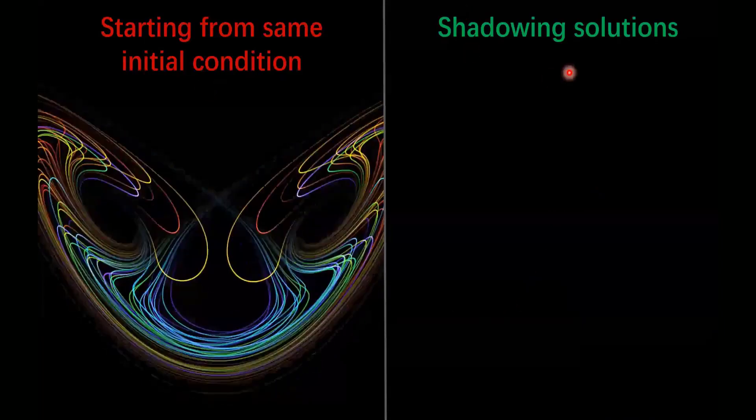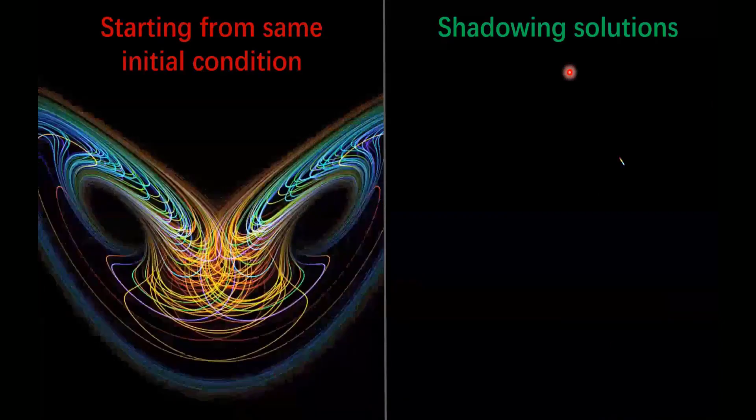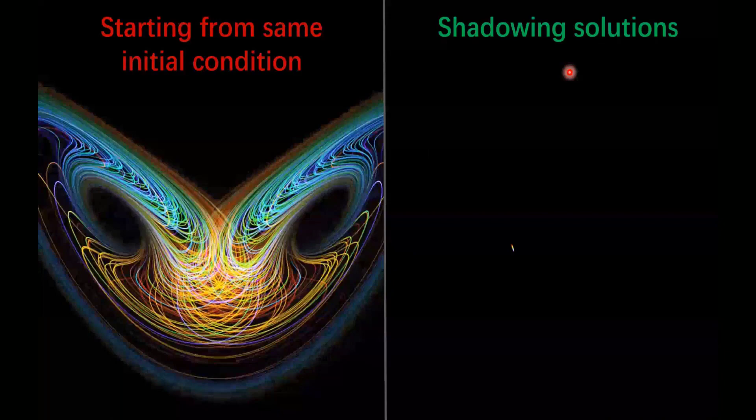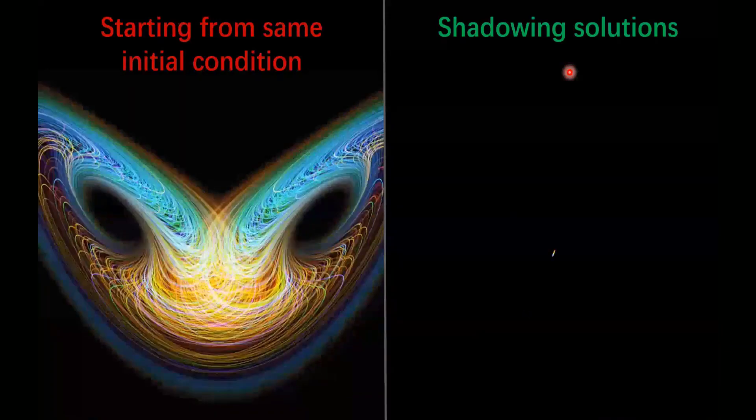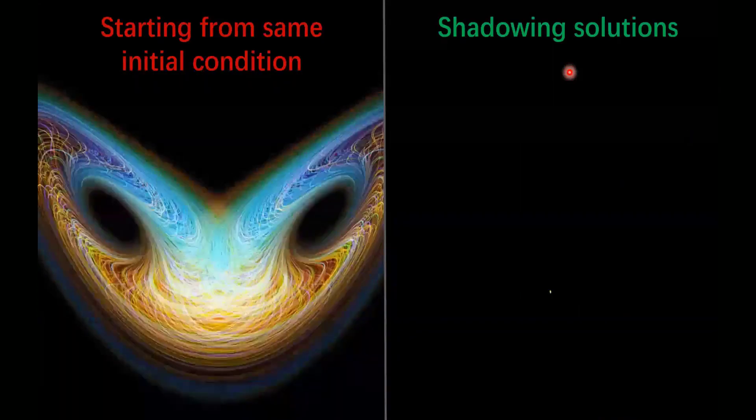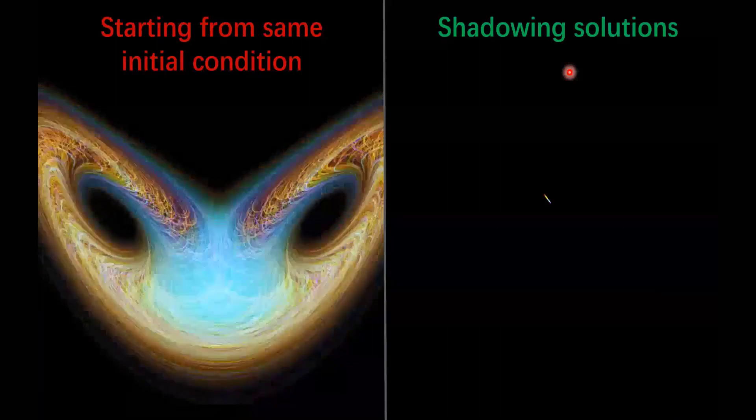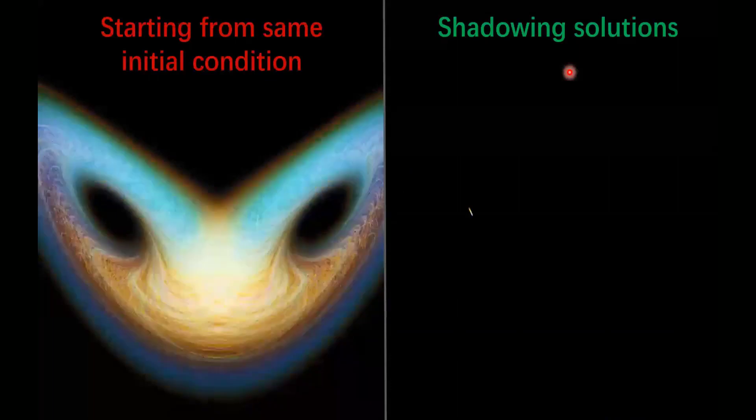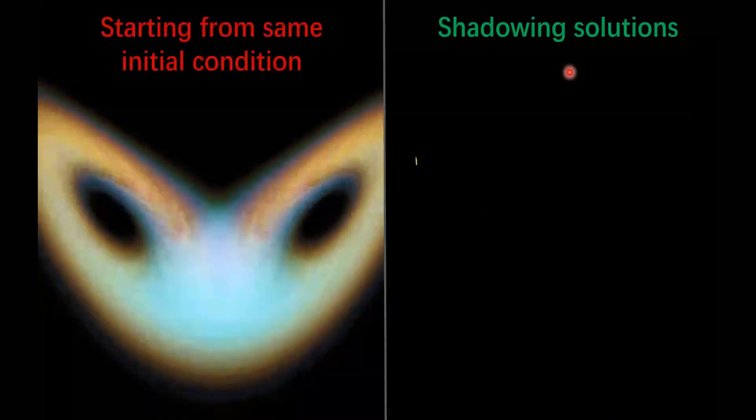On the right, you see the shadowing solutions. These solutions again satisfy the same set of different perturbations, again indicated by color. However, as time evolves, they stay together, they shadow each other. They don't diverge at all. It turns out for Lorenz, you cannot shadow for infinite time, but it's actually a very significant amount of time compared to the divergence of the nearby trajectories. So left and right are evolving at the same speed. So this is shadowing.